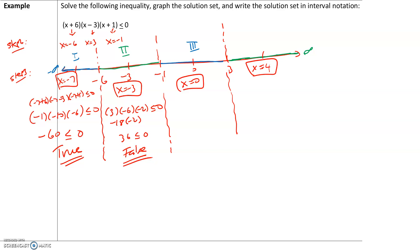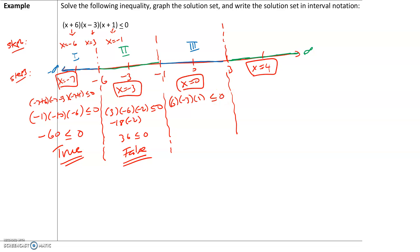For interval 3, plugging in x equals 0: (0 + 6)(0 − 3)(0 + 1). That's 6 times negative 3 times 1, which is negative 18. Is negative 18 less than or equal to 0? Yes, it is — so that is also a true statement.